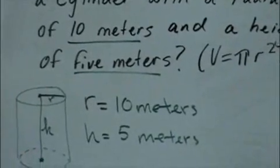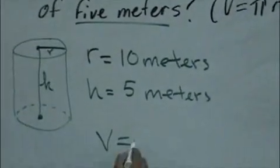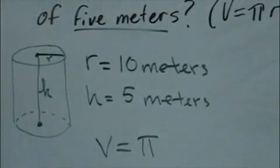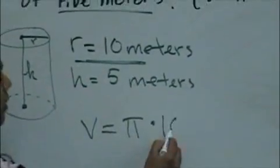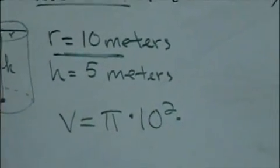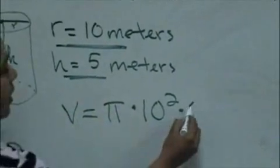So to find our volume, we're going to say our volume is pi, which is about 3.14, times the radius, which is 10 meters. So 10 squared times the height, which is 5 meters.